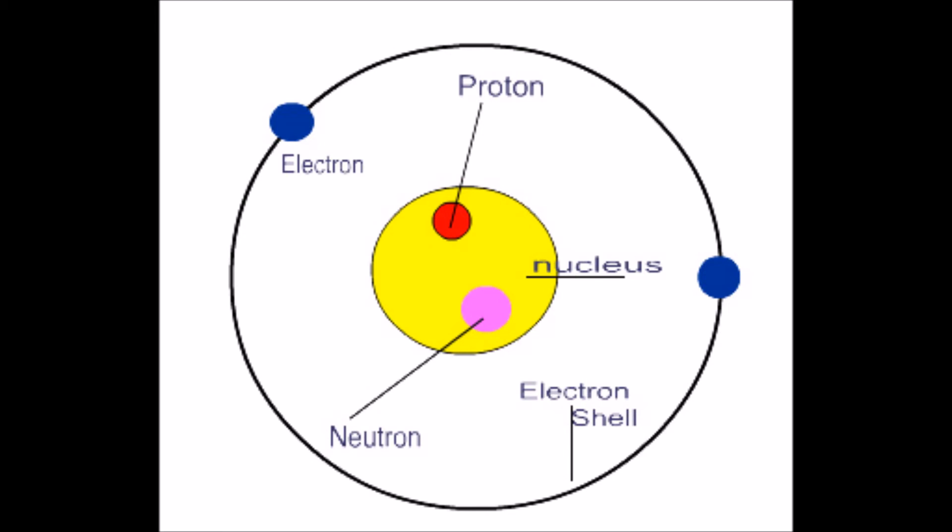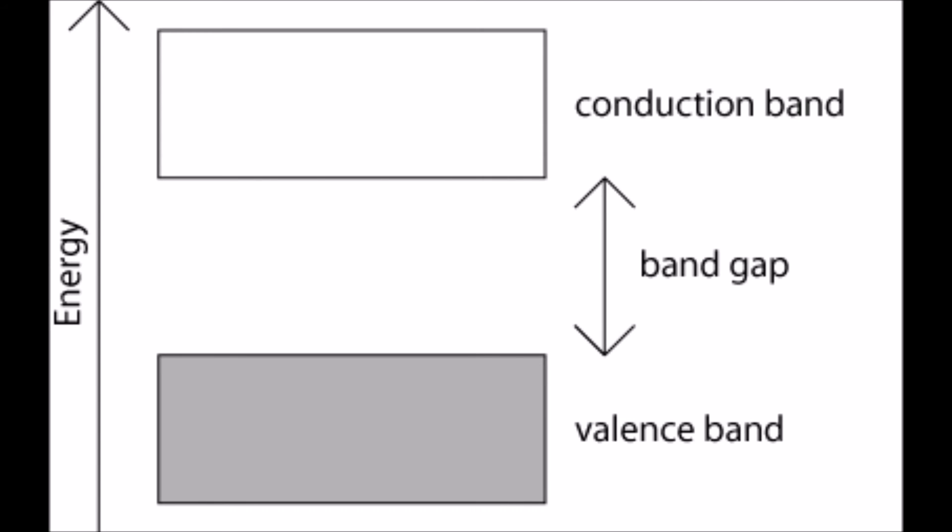The conduction band is the energy band formed by grouping the range of energy levels of free electrons. Generally, the conduction band is empty, but when external energy is applied, the electrons in the valence band jump into the conduction band and become free electrons. Since the valence band is at the lower axis of the graph, these lower energy electrons gain energy, and upon jumping into the conduction band, they become free electrons.